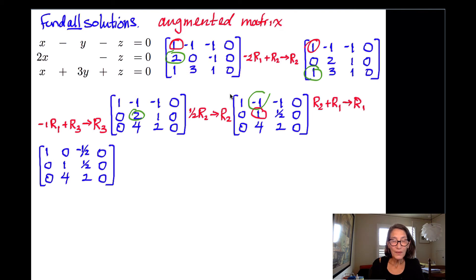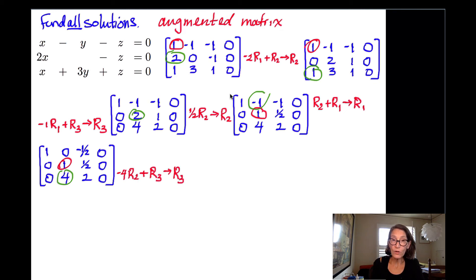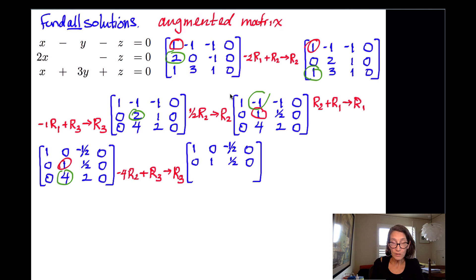Now I'm going to use that 1 again to knock out the 4 that's below it. I need to add negative 4 times row 2 to row 3: negative 4 times row 2 added to row 3 becomes my new row 3. Row 1 and row 2 don't change. The third row becomes 0, 0, 0, 0 — adding negative 4 times row 2 to row 3 knocked out everything in row 3.